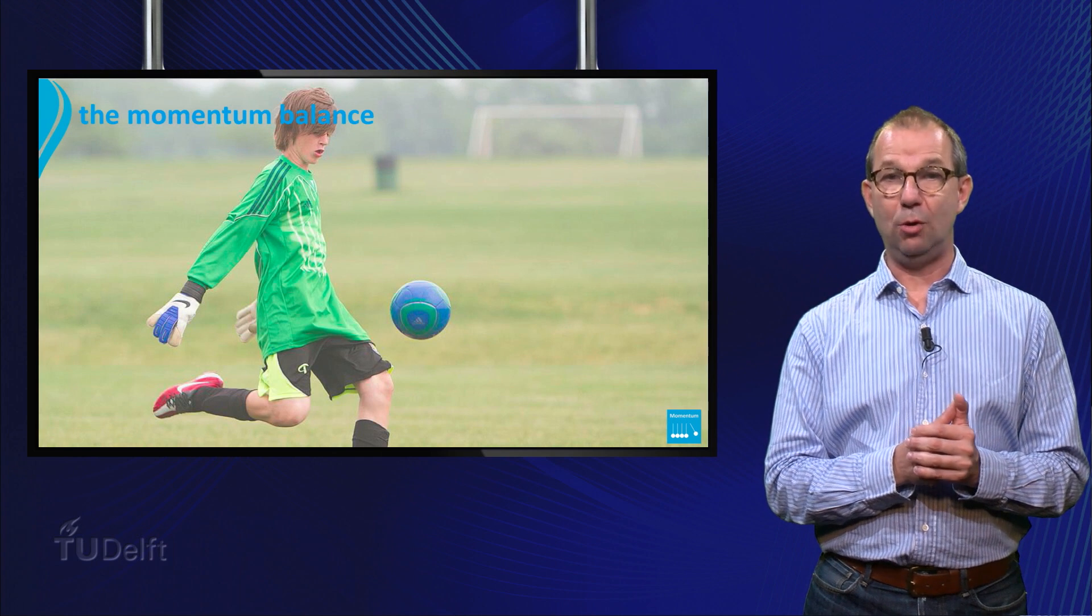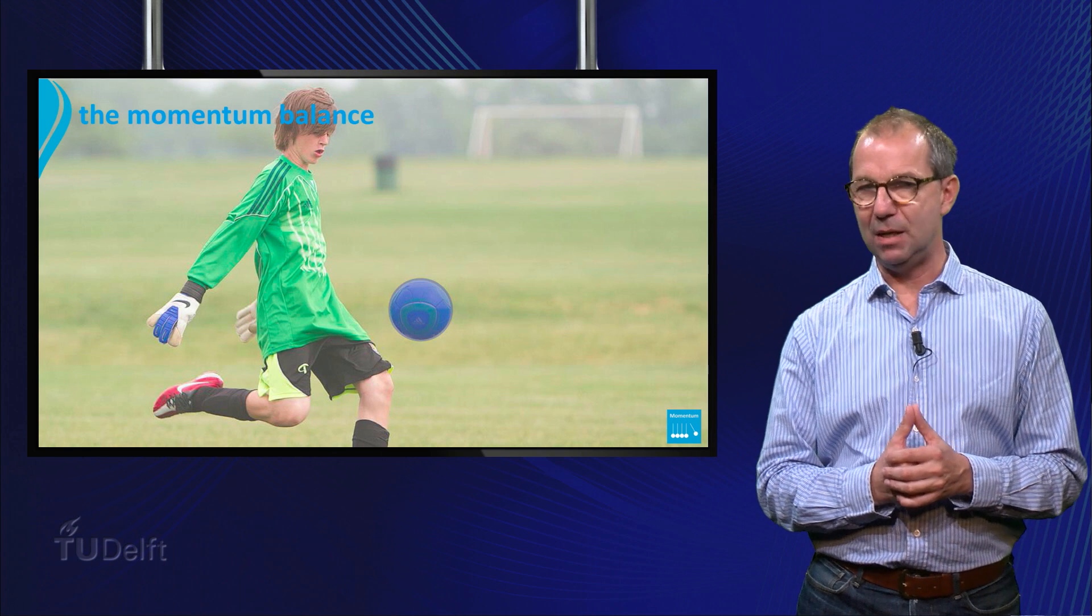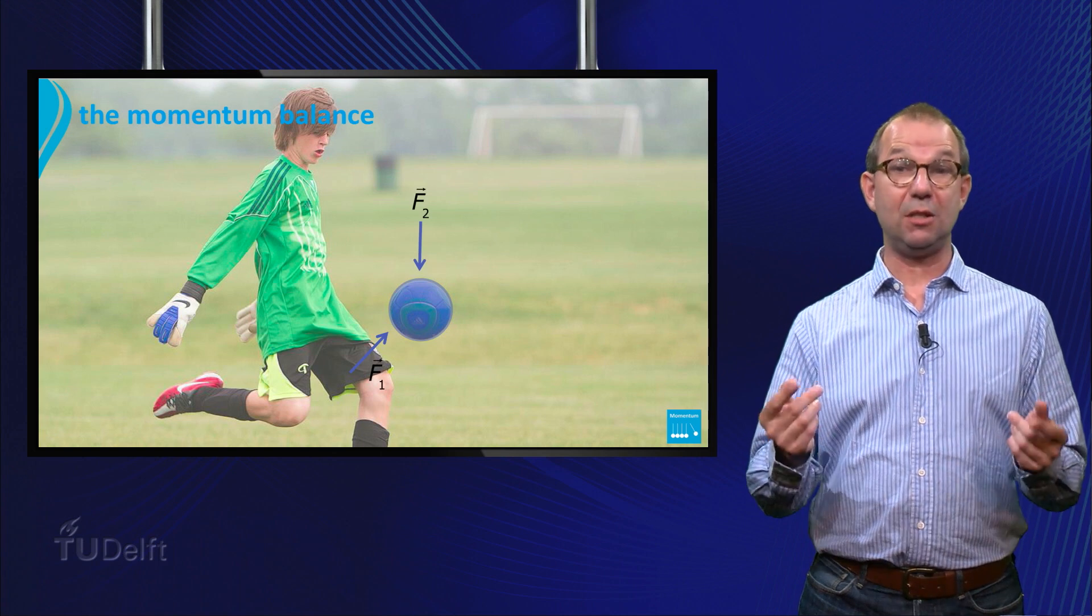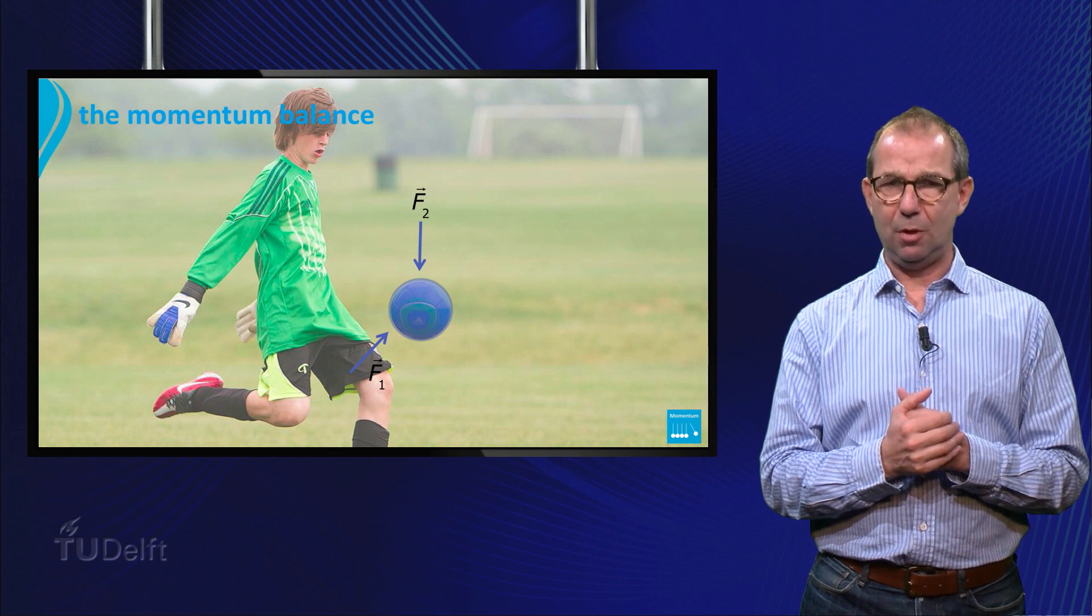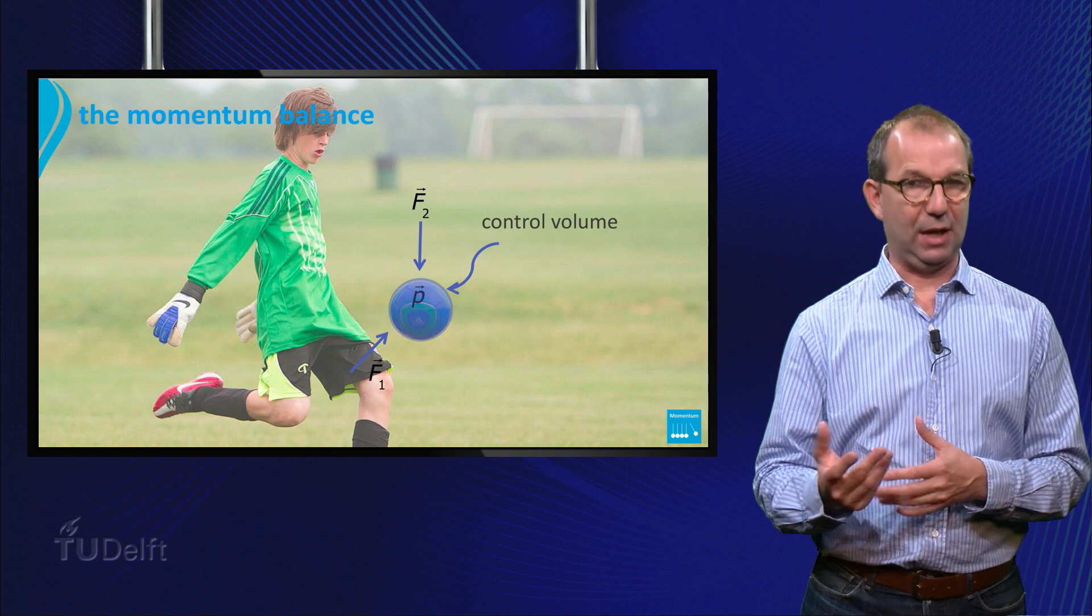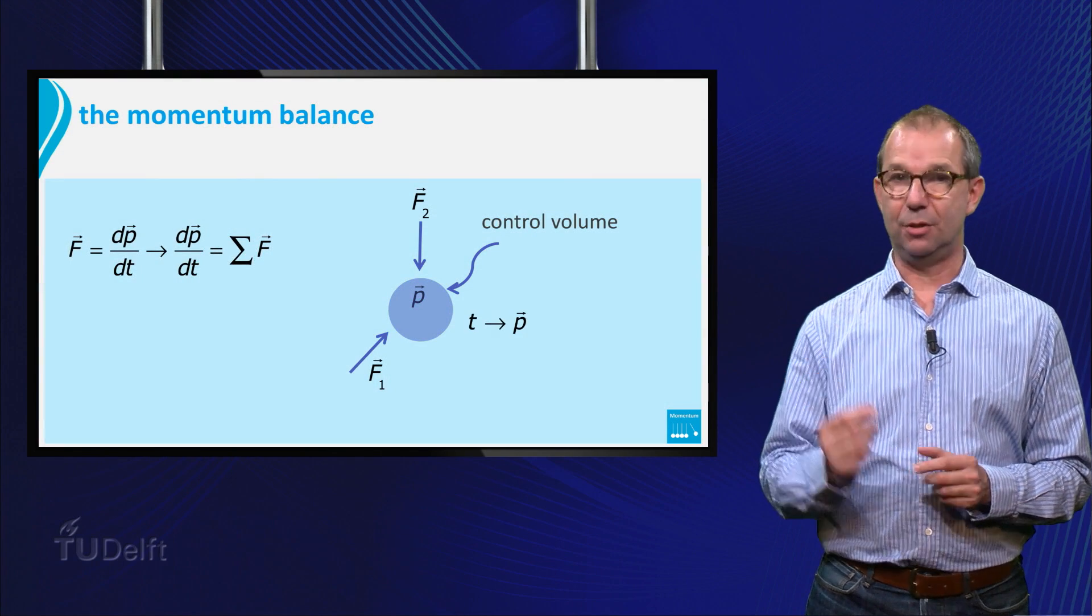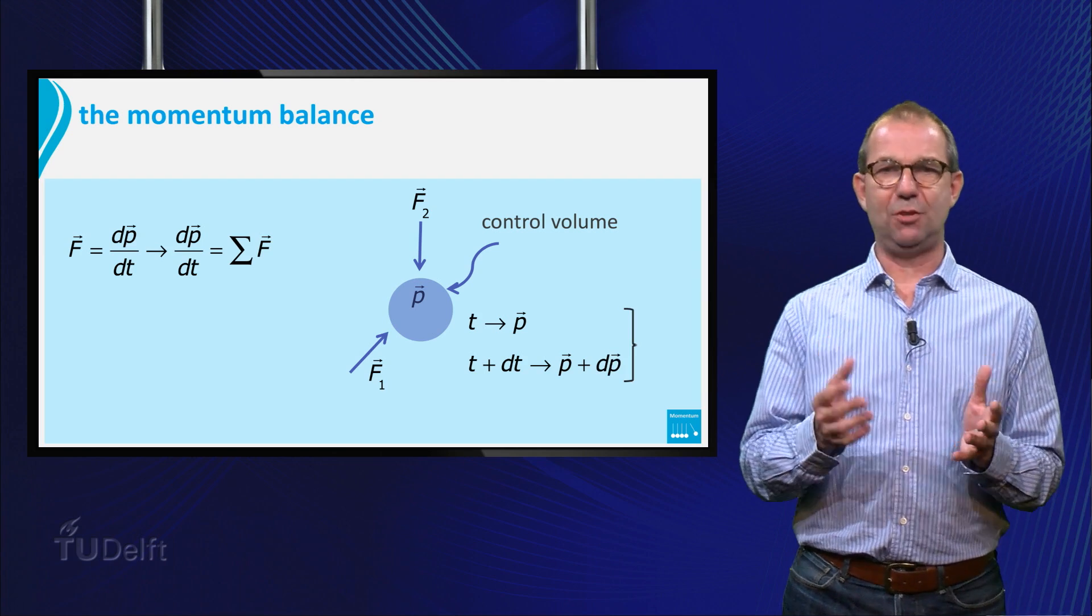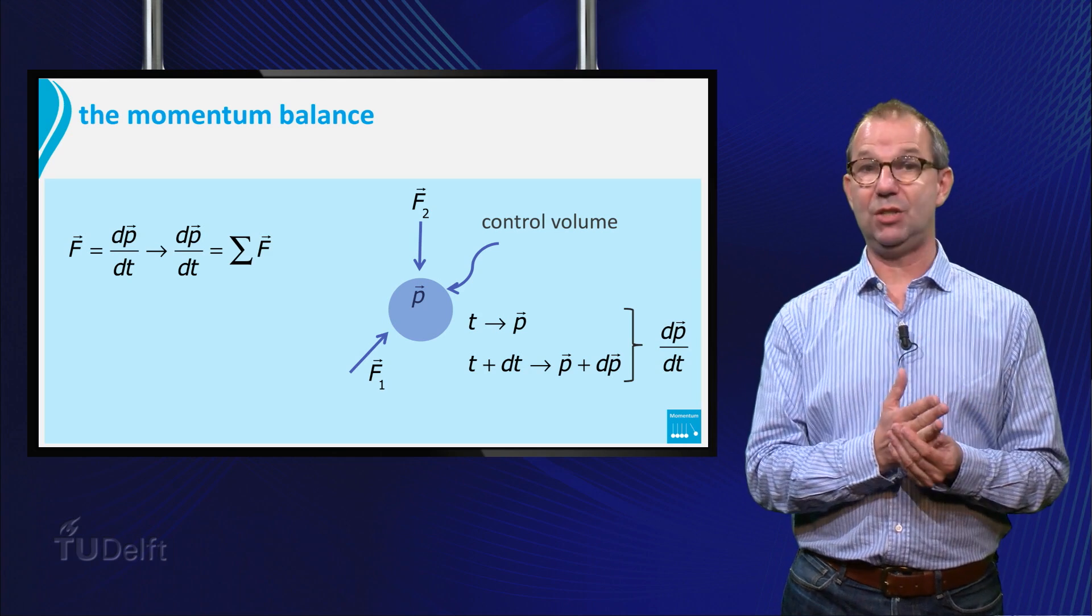Actually, this formula also reads as a balance. Take an object that has a momentum p. Two forces are acting on it, and as a consequence, the object will change its momentum. But if we rephrase this, we could also say, we take as our control volume the object. At time t it has momentum p. A little later it has a different momentum p plus dp. Thus, the change of momentum per unit time is dp/dt, just like the change of mass in the mass balance is dm/dt.